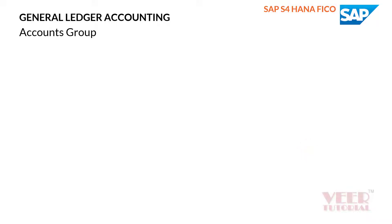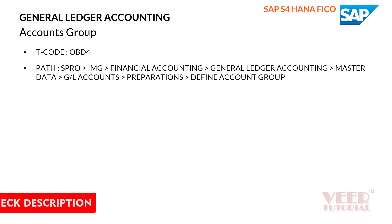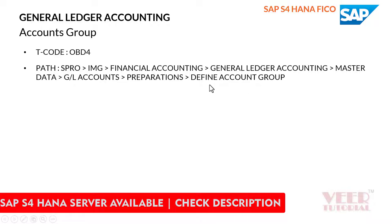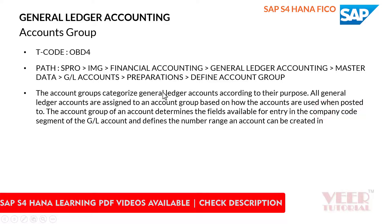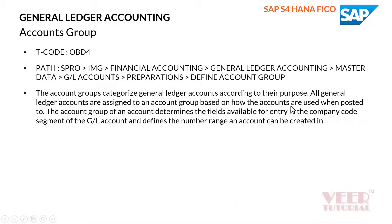In this video, we are going to learn about account groups. The T-code is OBD4, and the path is the same in which we created our chart of accounts — the second option is 'Define Account Groups.' The account group categorizes general ledger accounts according to their purpose. All GL accounts are assigned to an account group based on how they are used when posted to. The account group determines the fields available for entry in the company code segment of the GL account and defines the number range in which an account can be created.